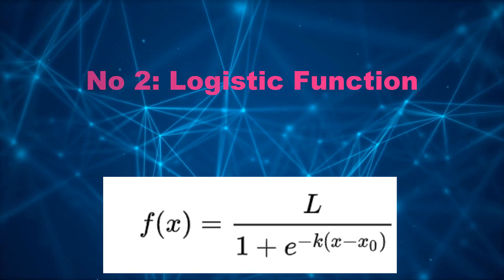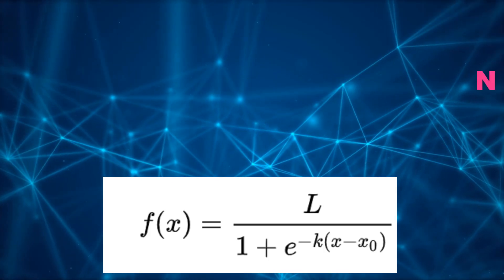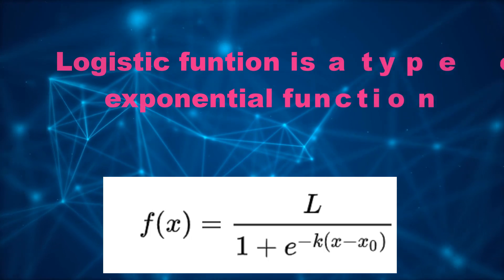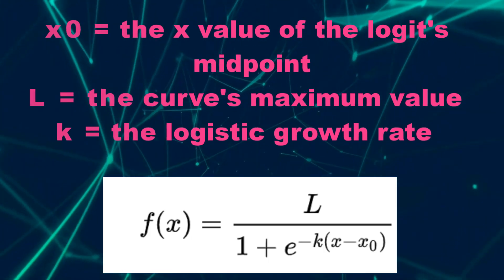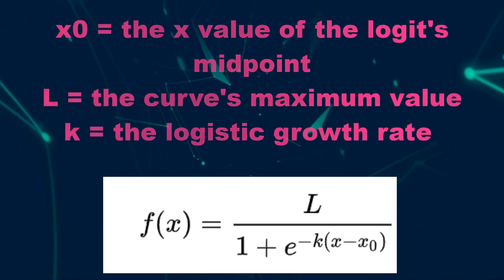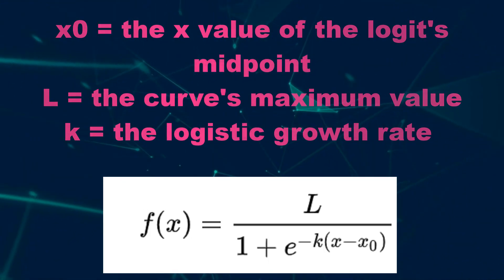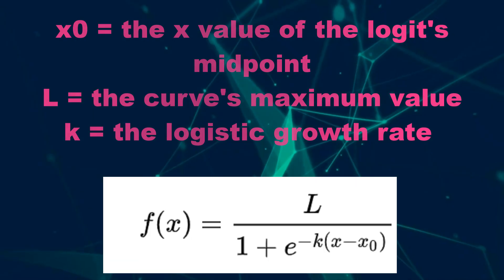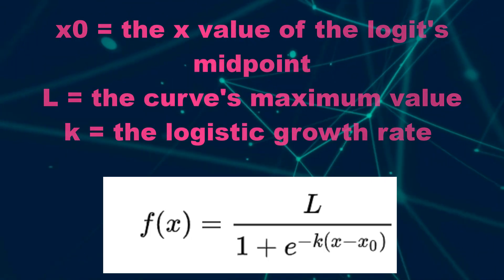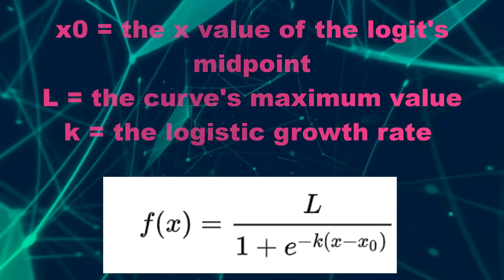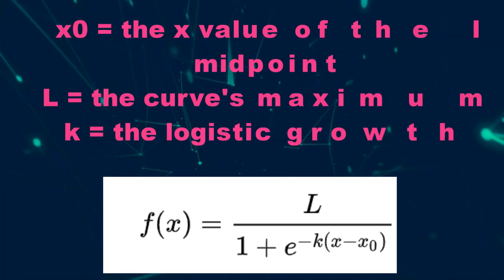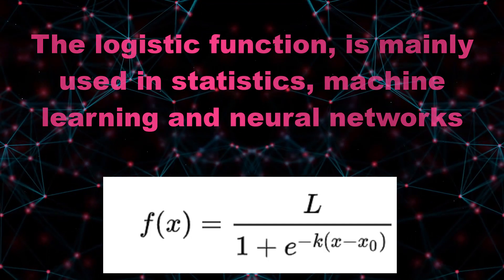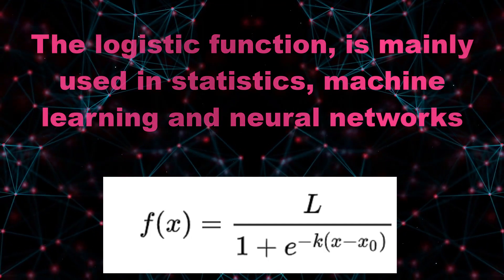The second concept is the logistic function. A logistic function is a type of exponential function that generally models exponential growth. Mathematically, the logistic function can be expressed as a formula where x0 is the x-value of the logit's midpoint, L is equal to the curve's maximum value, and k is equal to the logistic growth rate or steepness of the curve. It produces a common S-shaped curve and is mainly used in statistics, machine learning, and neural networks.